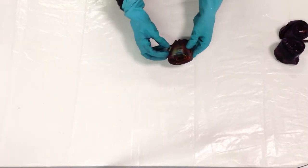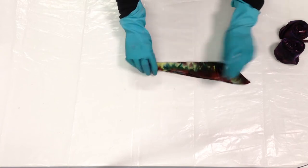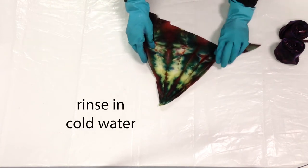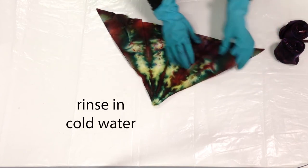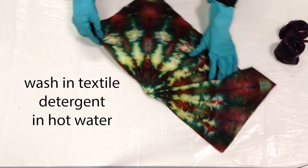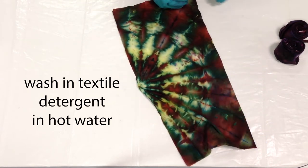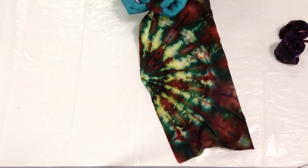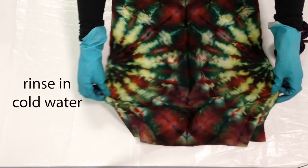All right, let's take a look here at the beauties we've created. The next step is to rinse the fabric in cold water until the water runs clear, and then to wash out the fabric in a sploosh of textile detergent in hot water. And rinse out the detergent.